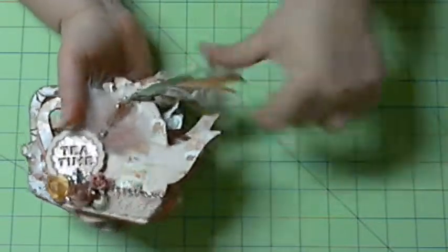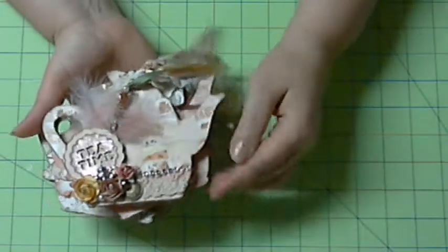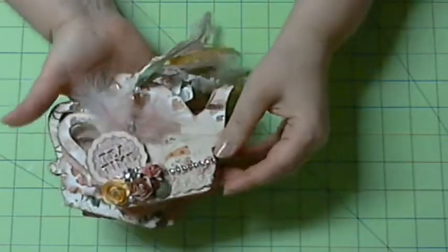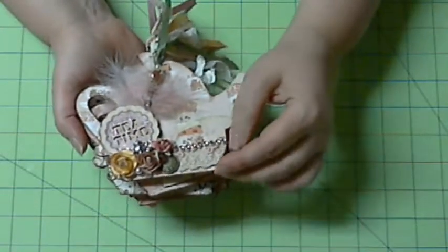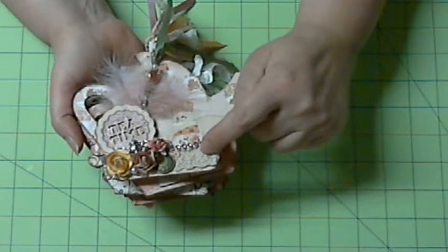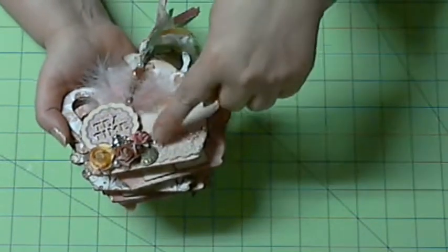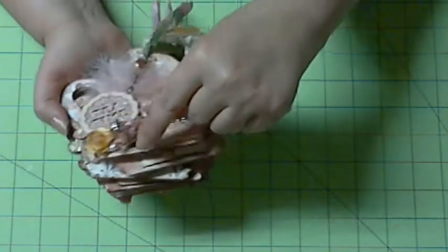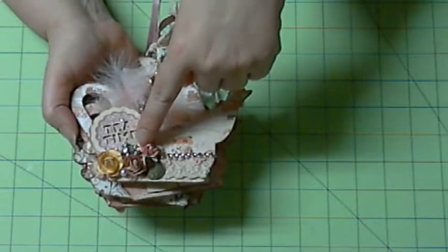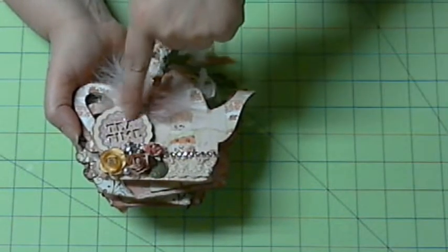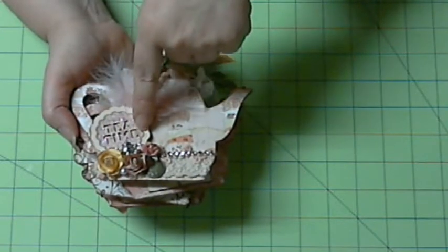So anyway, the front page, the whole thing I distressed it with Vintage Photo and I put a little piece of lace here, some trim and some bling. I put three paper flowers, then I put a pearl, a bead and then a clock, and then I put a teapot here.